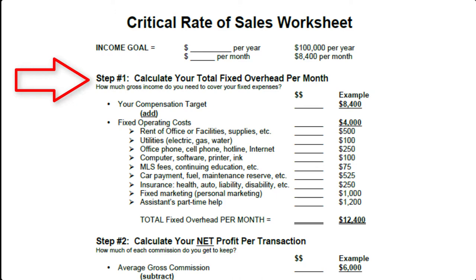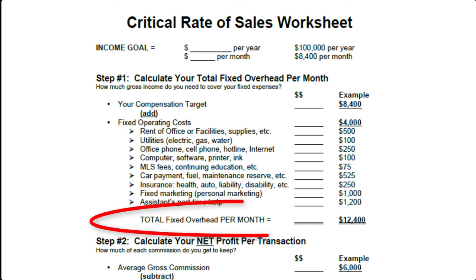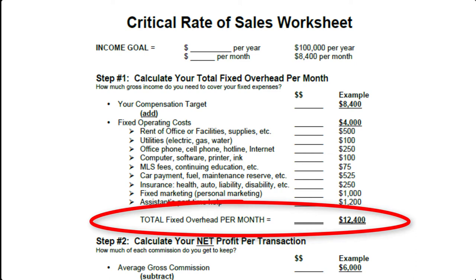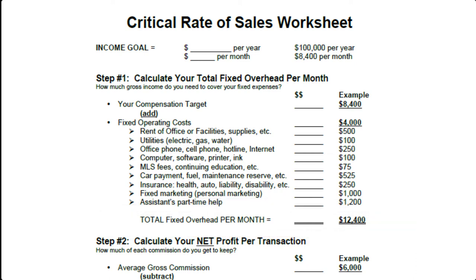Then what you do is you total up your overhead per month, which includes your fixed expenses or operating expenses and how much money you want to net. So in this example, in order to make $100,000 a year you'd have to make $8,400 a month.